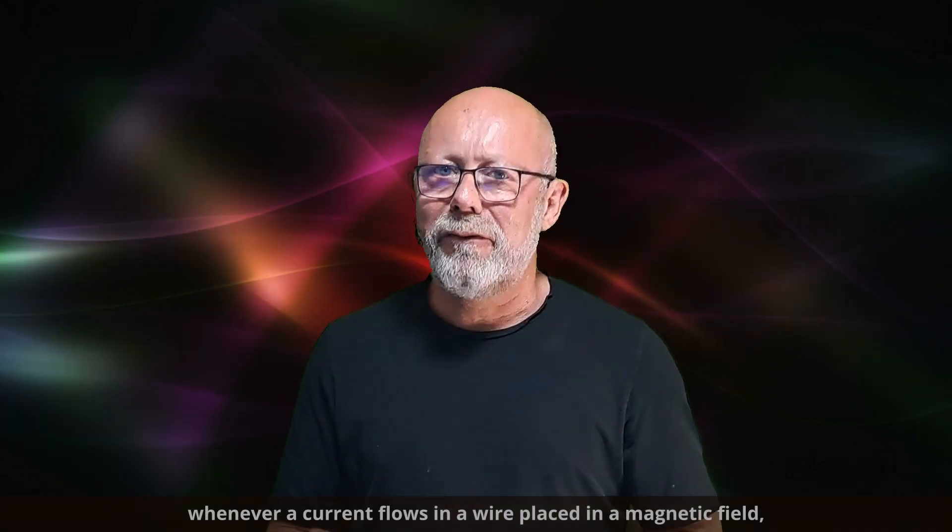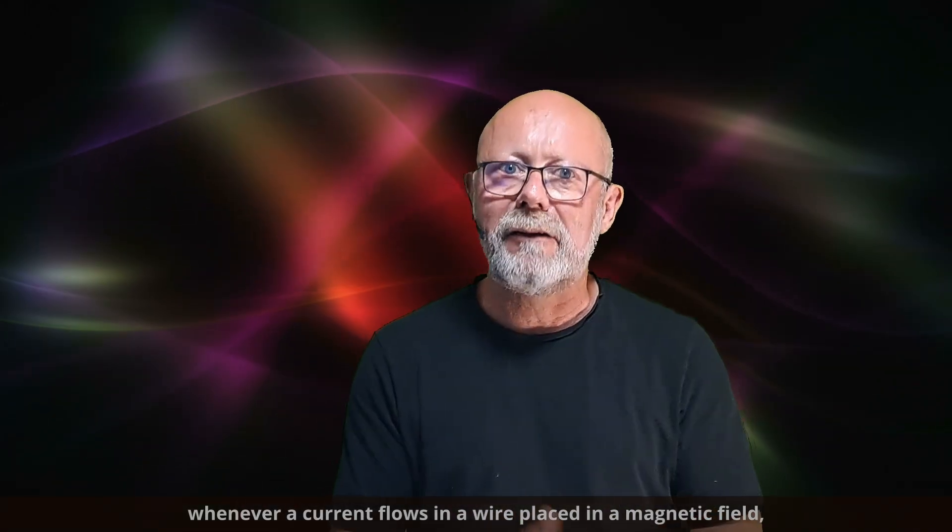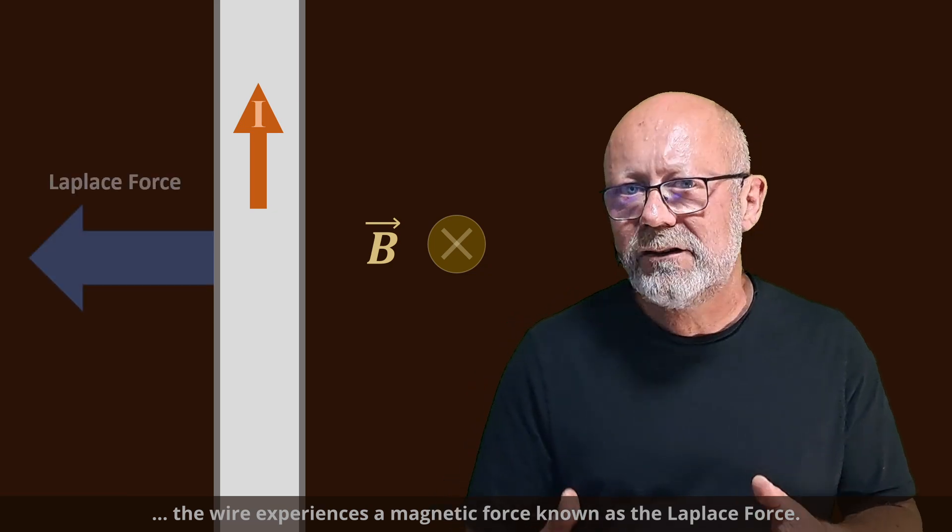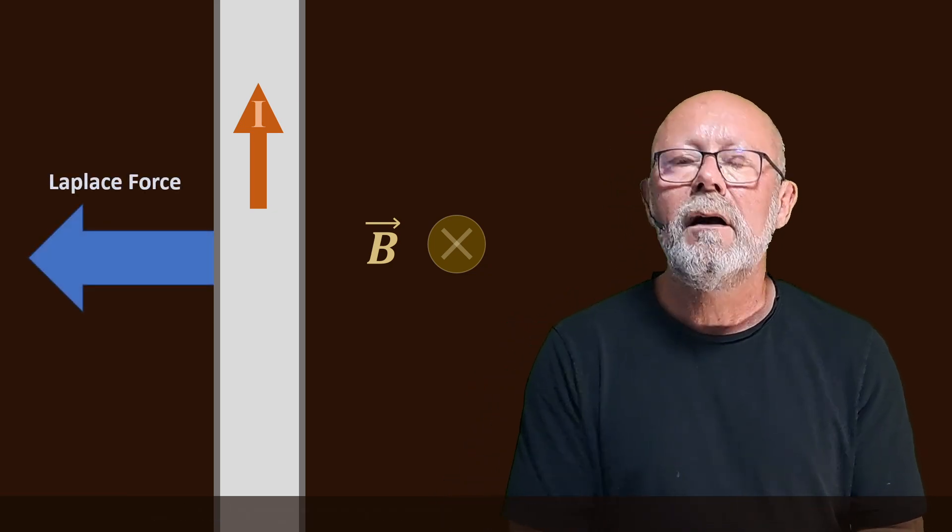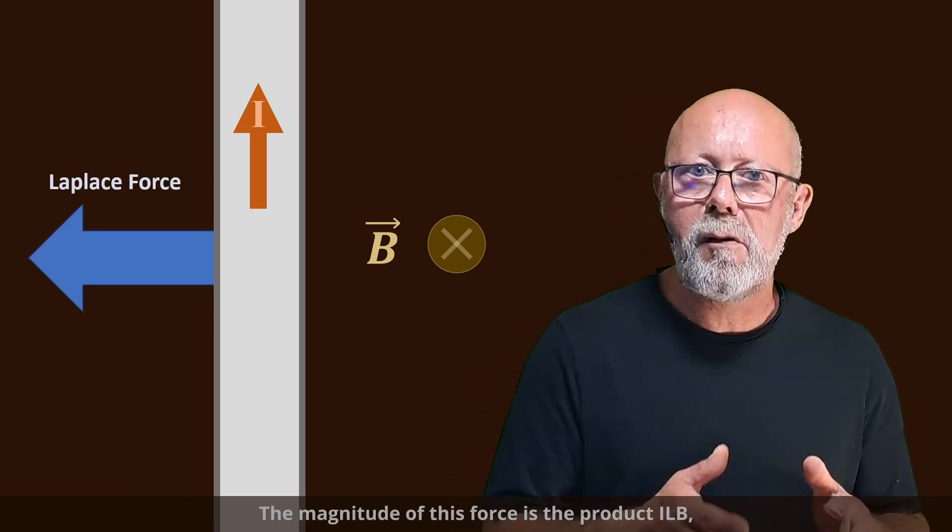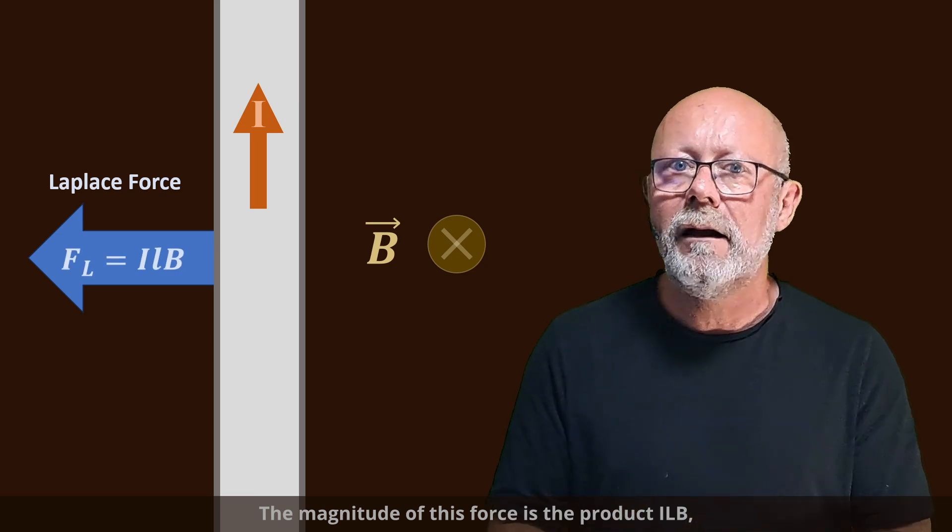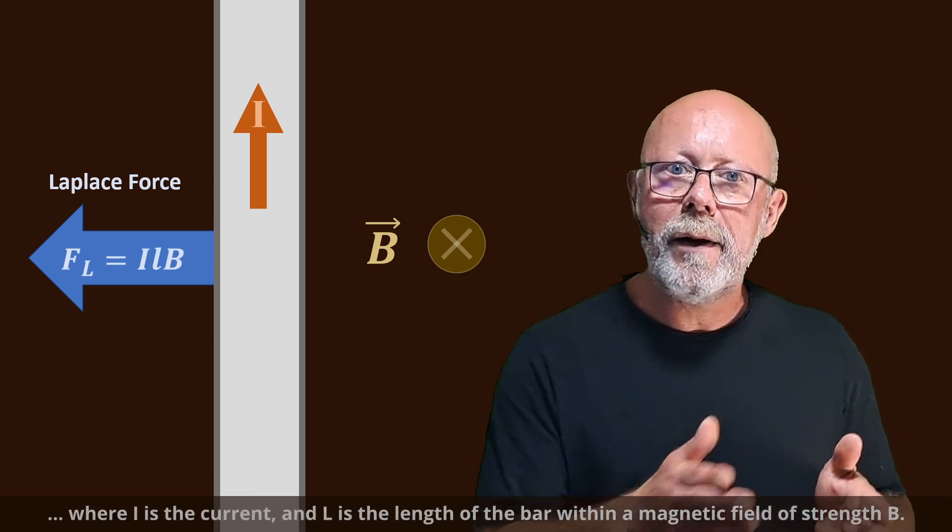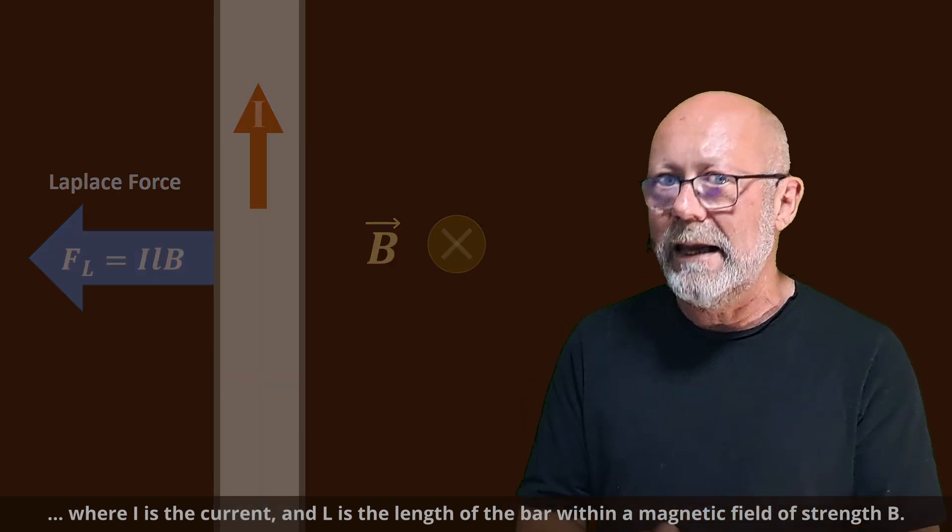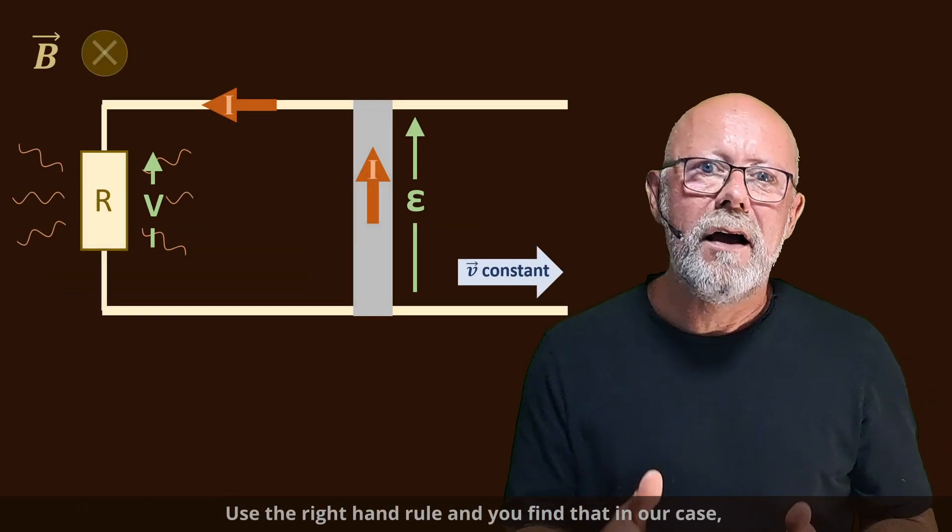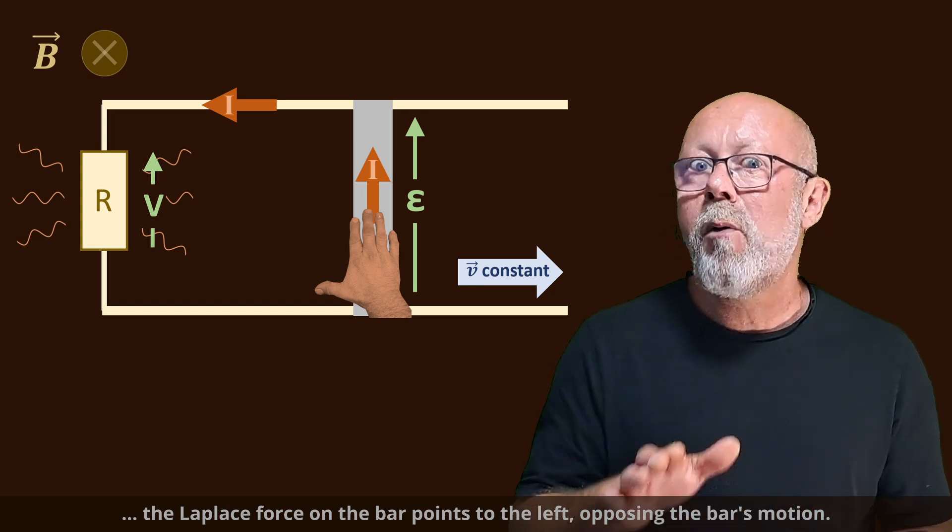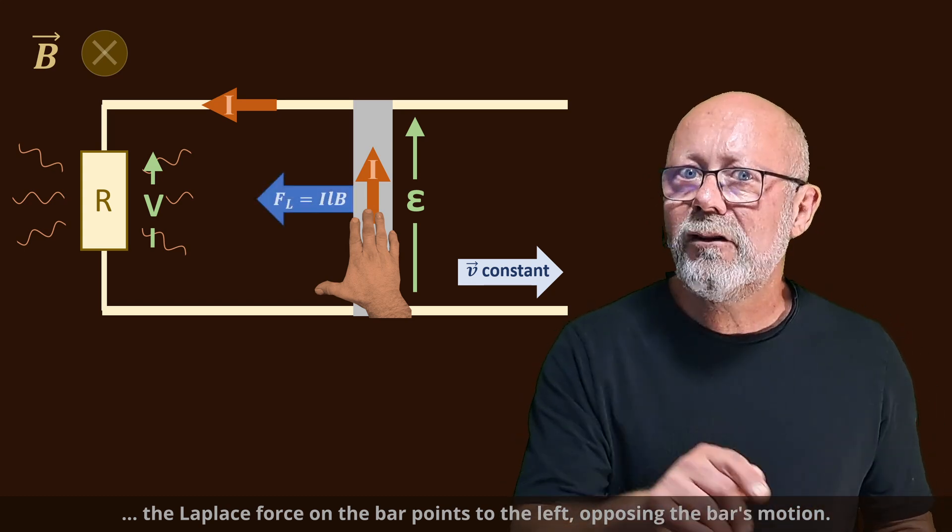Whenever a current flows in a wire placed in a magnetic field, the wire experiences a magnetic force known as the Laplace force. The magnitude of this force is the product ILB, where I is the current and L the length of the bar within a magnetic field of strength B. Use the right-hand rule and you find that, in our case, the Laplace force on the bar points to the left, opposing the bar's motion.